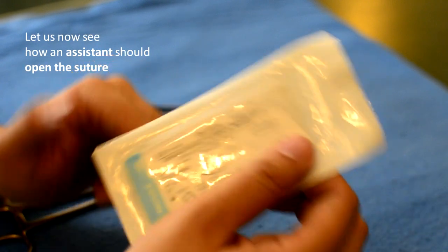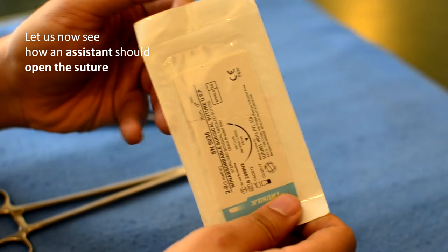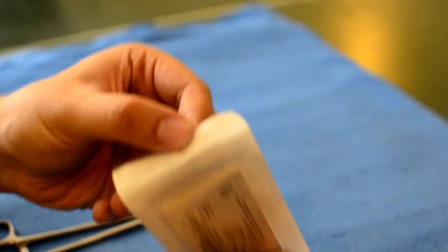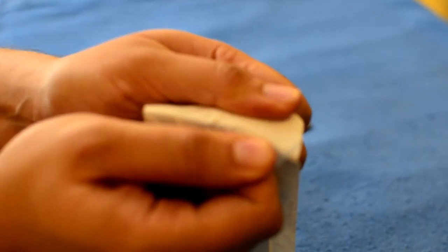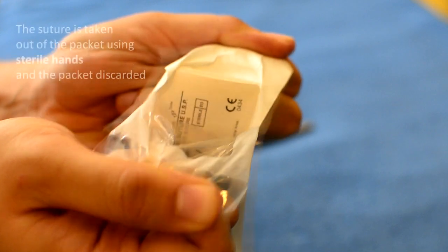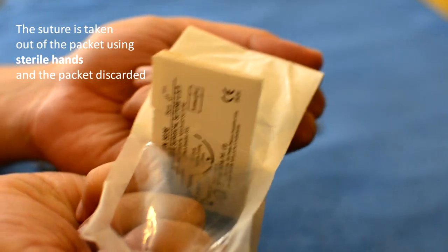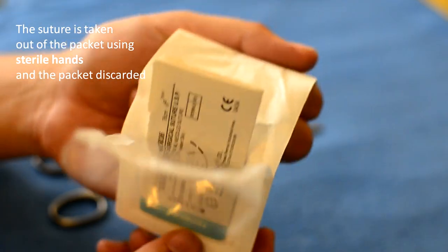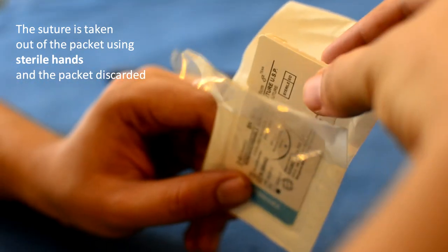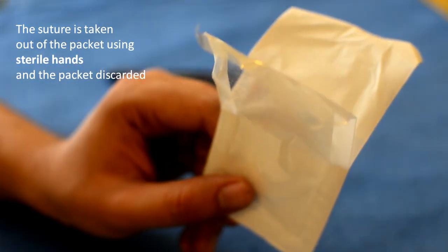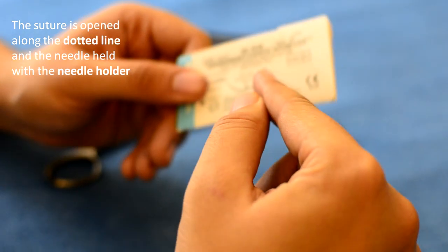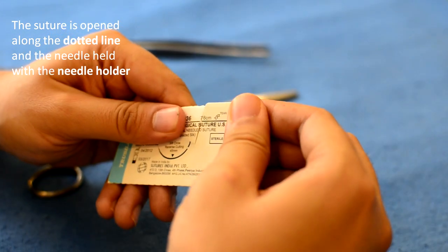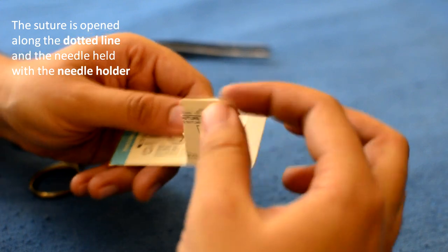Let us now see how the assistant should open the suture. The suture is taken out of the packet using sterile hands and the packet is discarded. You have to open the suture along the dotted line and the needle is held with the needle holder.